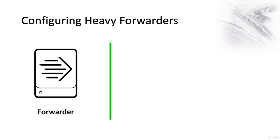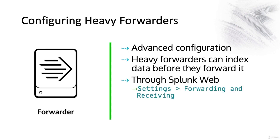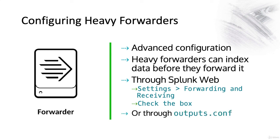We can also do some advanced configuration on heavy forwarders. We can ask the forwarder to index data before it forwards it. We can do this through Splunk Web, through Settings, Forwarding and Receiving, and you simply check the box that says store and maintain a local copy of the indexed data on the forwarder. Or this can all be configured through outputs.conf.